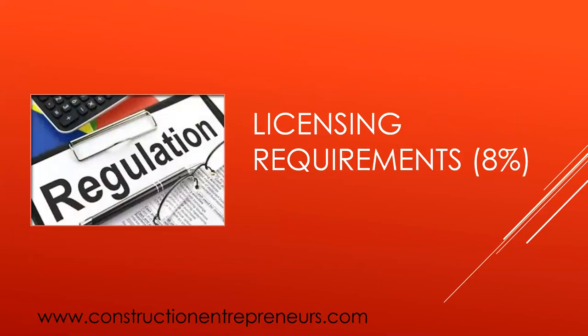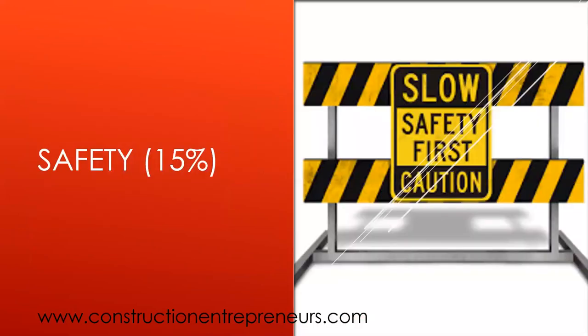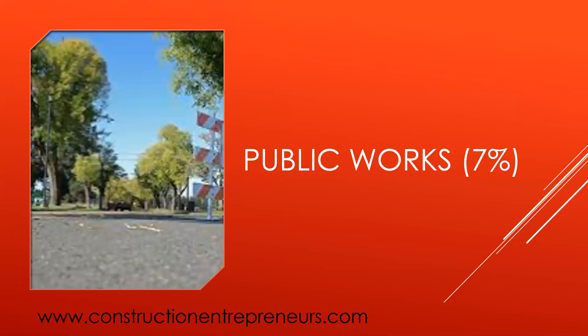Next section would be licensing requirements. This will hold 8% of the examination, and it's going to talk about business licenses, contractors licenses, and activity regulations. Number seven, at 15% of the examination, is safety, and safety is going to cover training and reporting requirements, general safety, and hazardous and unknown materials. The last section is public works at 7% — they're going to talk about prevailing wage requirements, bonding requirements, and insurance requirements.